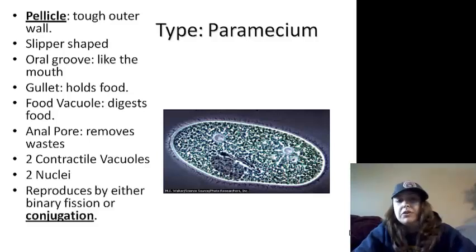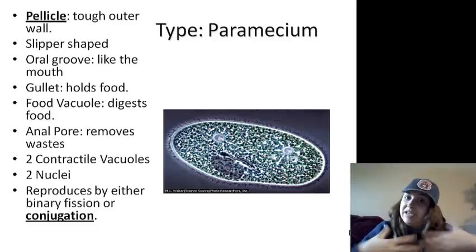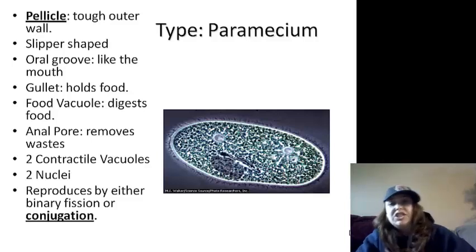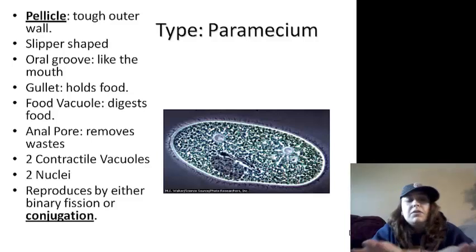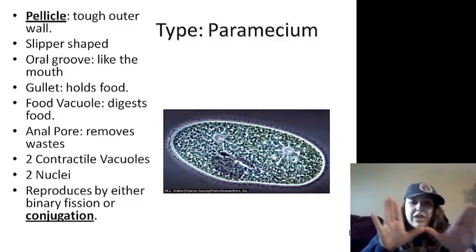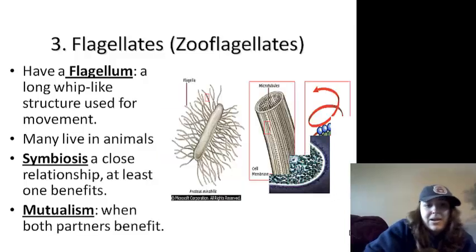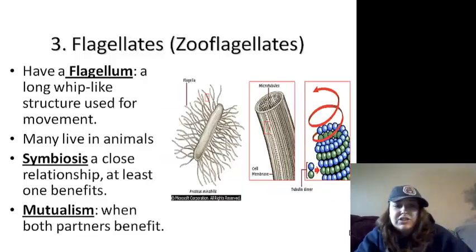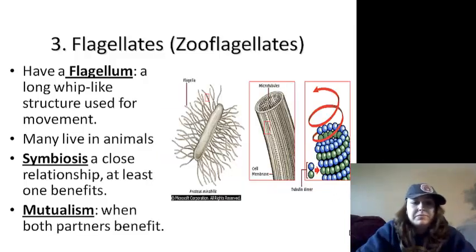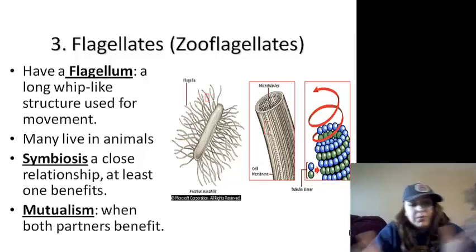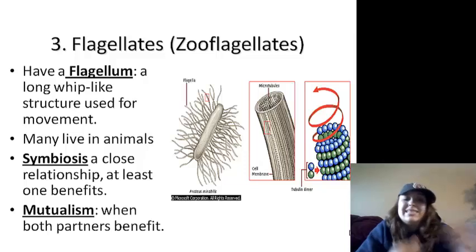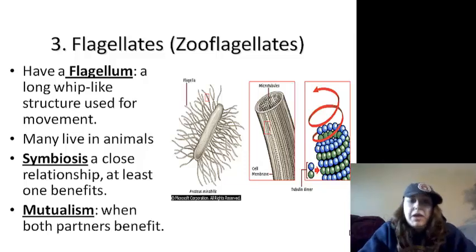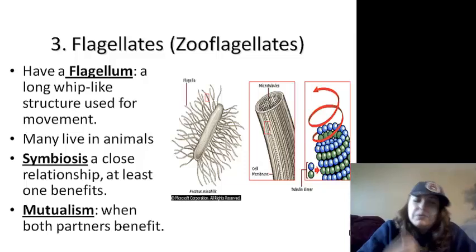Paramecium reproduce by conjugation — two of them line up beside each other, they touch and share their DNA. Next: flagellates, or zooflagellates. They have a flagella with a whip-like structure. Many live inside animals in a symbiotic relationship. Most of them are mutualistic, which means both partners benefit.